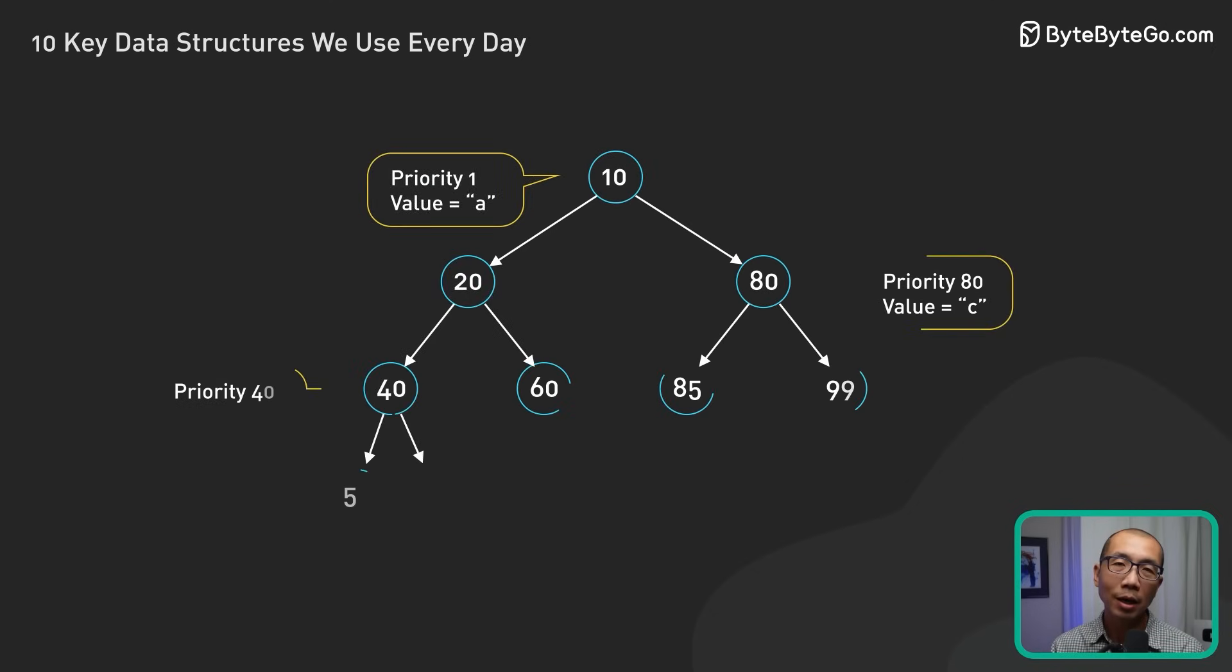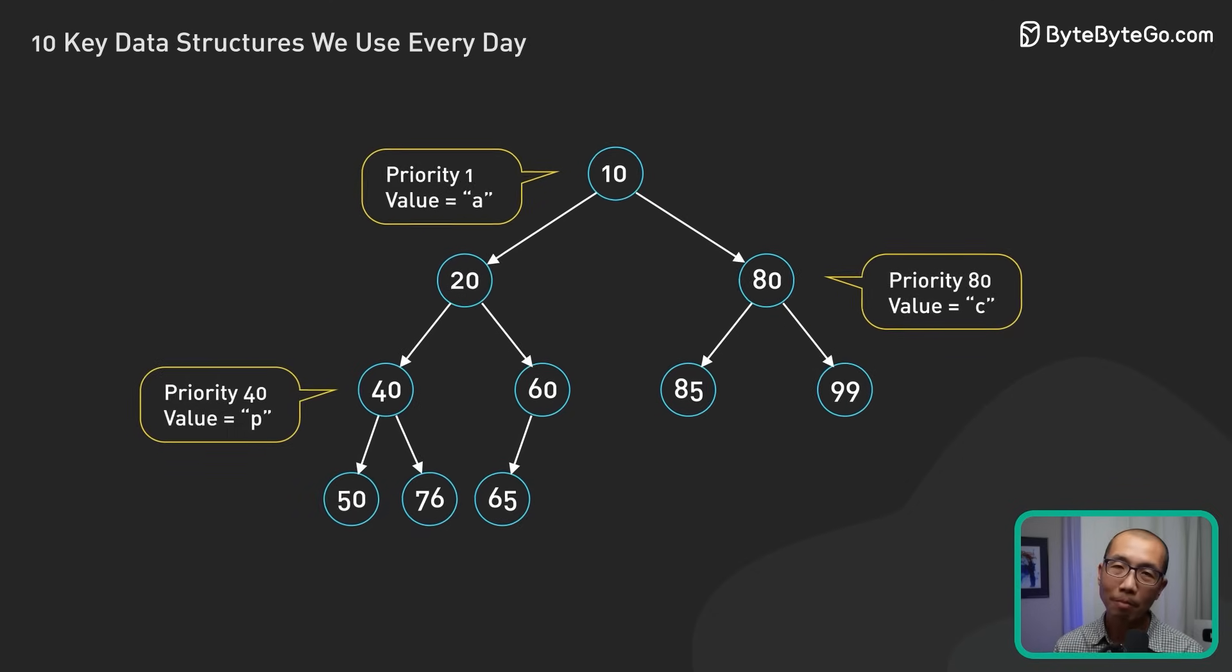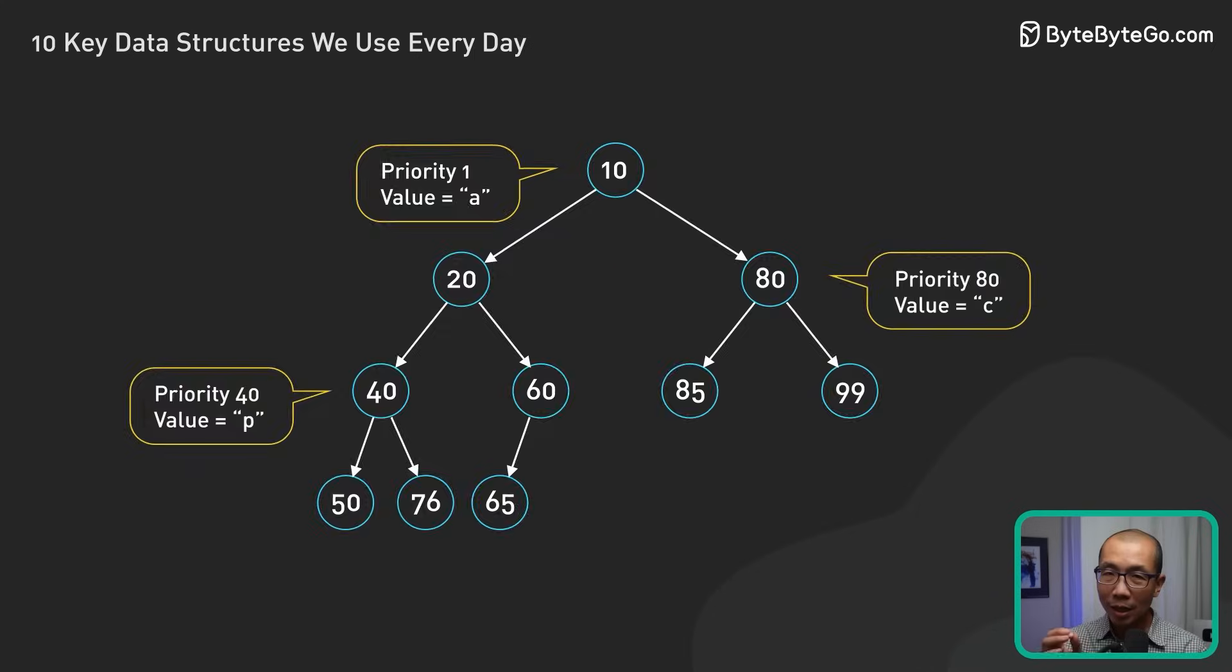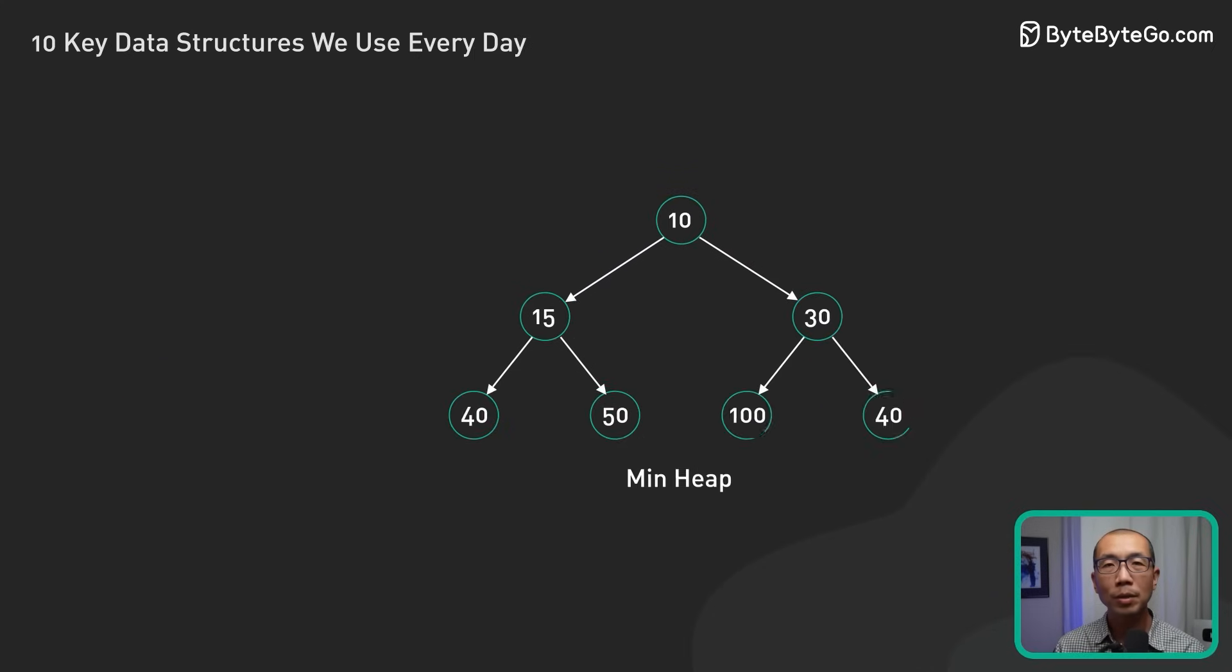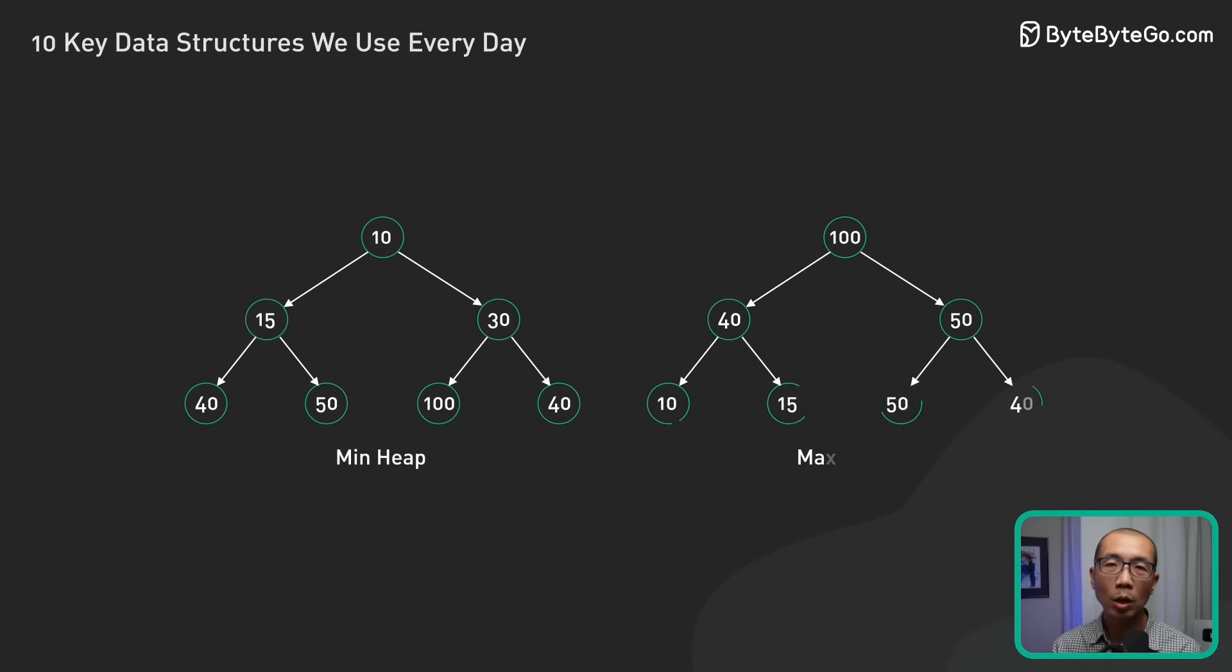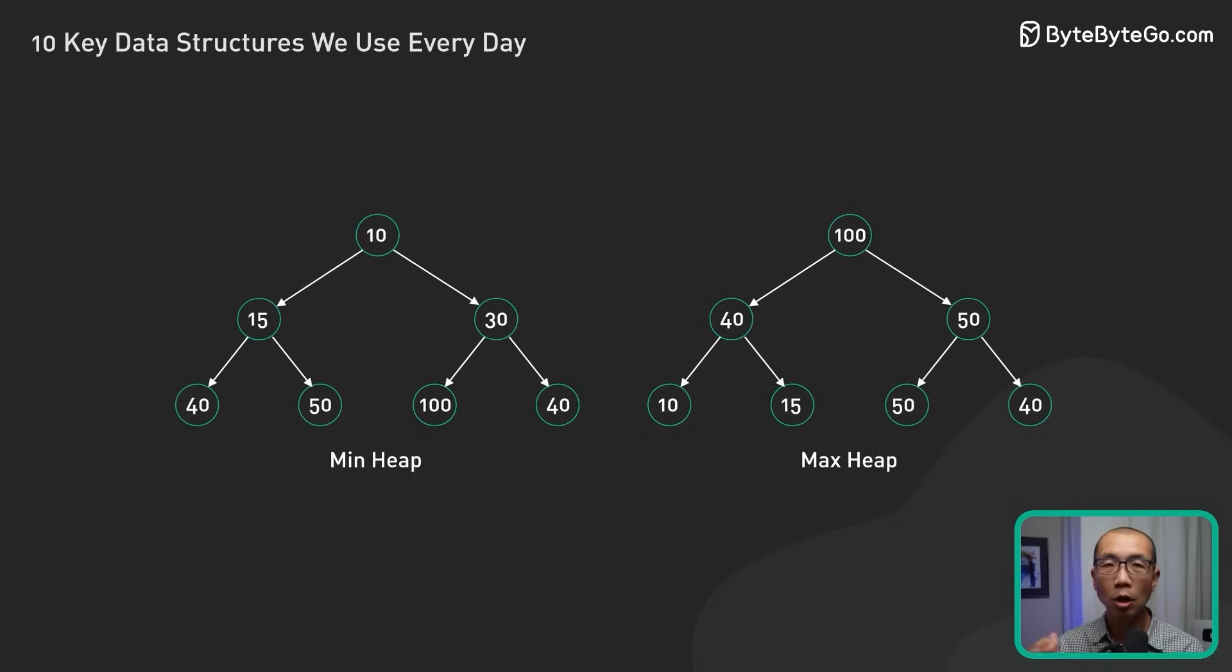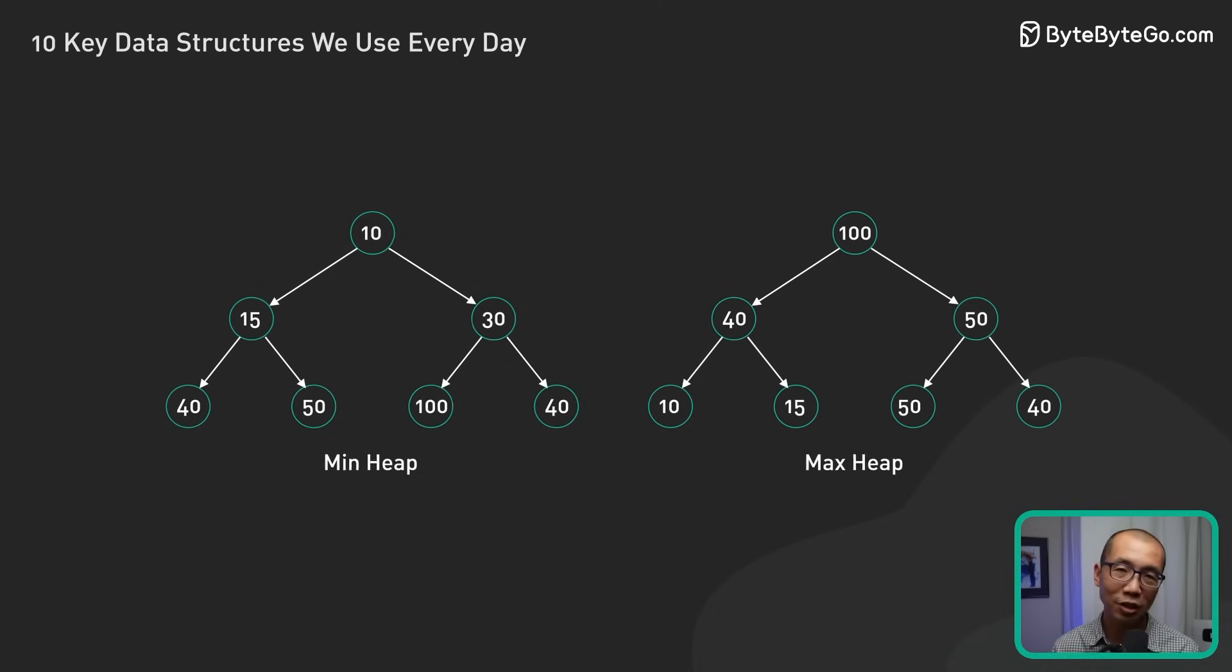Heaps, on the other hand, are used for task scheduling and memory management. They are especially helpful in implementing priority queues where we need to access the highest or lowest priority item efficiently.